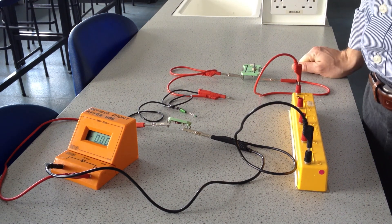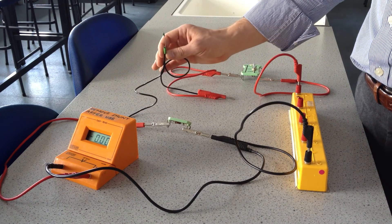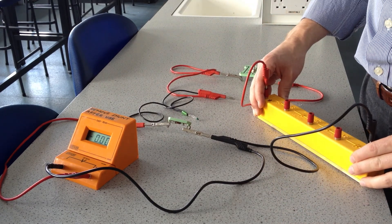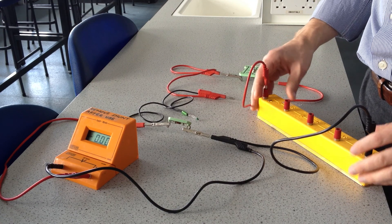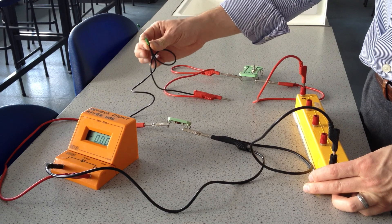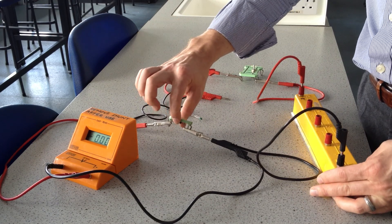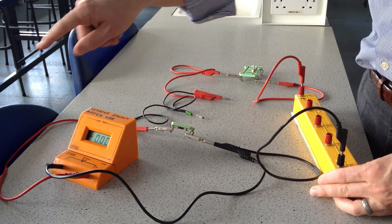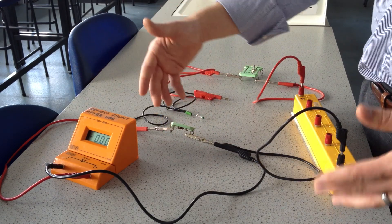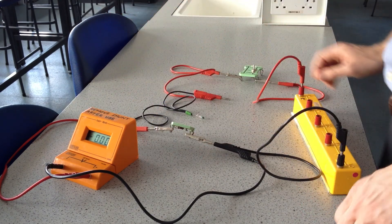This is a potential divider experiment using a negative temperature coefficient thermistor. The setup is we have our supply voltage provided by the cells here. They are in series with our NTC thermistor and a fixed resistor. In parallel across the fixed resistor we have a voltmeter that will be reading our voltage output for our potential divider.